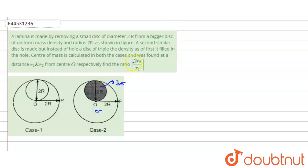If the center of mass in both cases are r1 and r2 respectively, we need to find the value of 2r2 divided by r1. In both figures, the center of mass lies on the y-axis because it is a symmetric case.